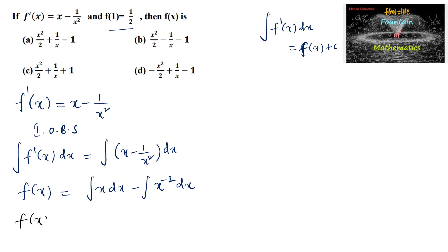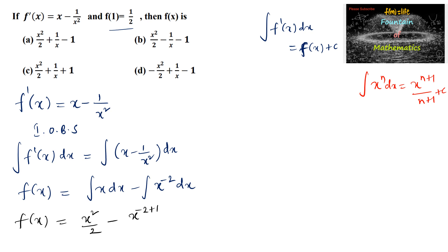So f(x) equals integration of x, which is x squared by 2, since we know that integration of x to the power n dx is equal to x to the power (n+1) by (n+1) plus c. Here minus x to the power (minus 2 plus 1) divided by (minus 2 plus 1) plus integral constant c.